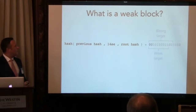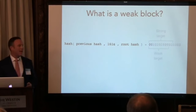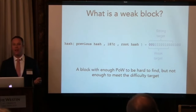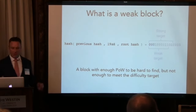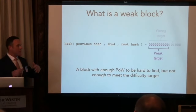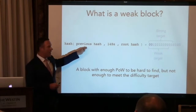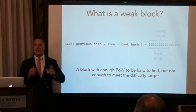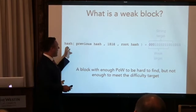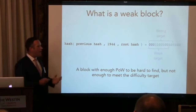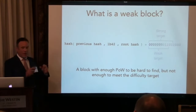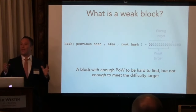Subchains are built using weak blocks. So what exactly is a weak block? It's basically a normal block with enough proof of work to be hard to find, but not quite enough proof of work to become a valid strong block. When a miner is trying to find a block, he takes the hash of the previous block, takes the Merkle root of the transactions in his block candidate, and tries a whole bunch of nonce values until he finds a sequence that when hashed together results in a number that expressed in binary begins with a large string of zeros. To get a strong block, you need lots of zeros. To get a weak block, you still need lots, but not as many.